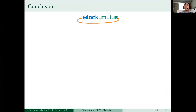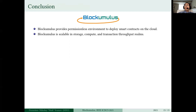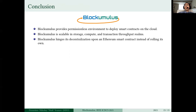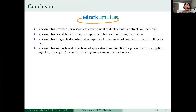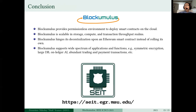In conclusion, we deliver Blockumulus, the framework that allows to deploy and execute smart contracts in the cloud and achieve scalability in storage, computation, and transaction throughput all at the same time. Blockumulus allows to achieve decentralization using an Ethereum smart contract. Blockumulus allows to support applications that traditional public blockchains cannot support because of their scalability limitations. This work was done in the Secure and Intelligent Things Lab at Michigan State University. Thank you for your attention, and I'm ready to answer your questions.